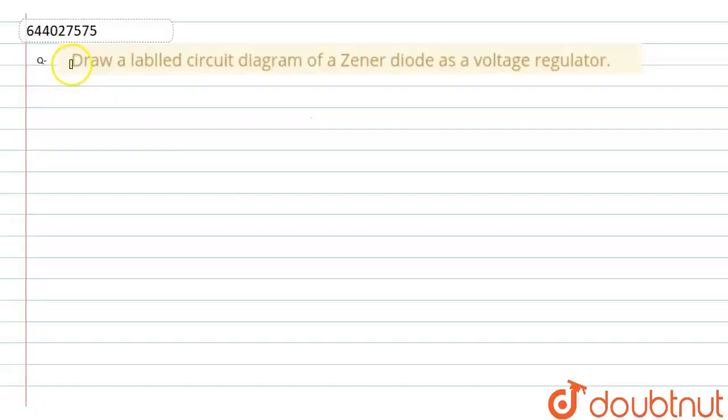The question is, draw a labelled circuit diagram of a Zener diode as a voltage regulator. Zener diode as a voltage regulator. Answer is,